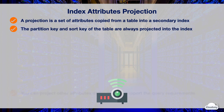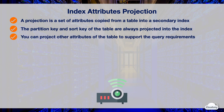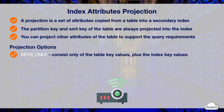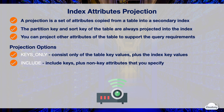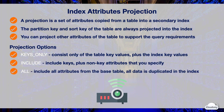You can project other table attributes to support your query requirements. When you query an index, DynamoDB can access any attributes in the projection. DynamoDB provides three options for projections: Keys Only, Include, and All. The Keys Only option allows each item in the index to consist of only the table partition key, sort key values, and index key values, resulting in the smallest possible secondary index. The Include option adds non-key attributes that you specify.